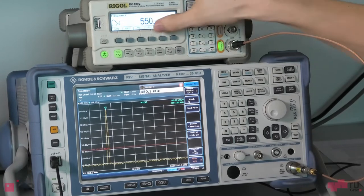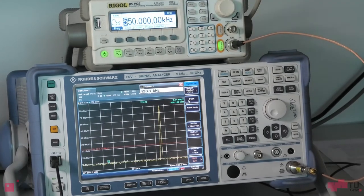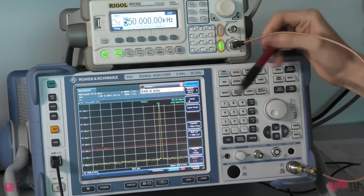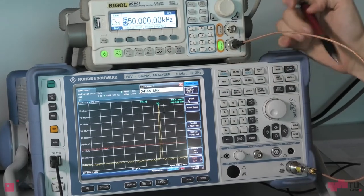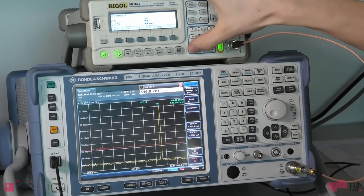When I change it to 550 kilohertz the peak jumps over to 550 kilohertz and the amplitude once again stays the same. Now let's return to our default setup.